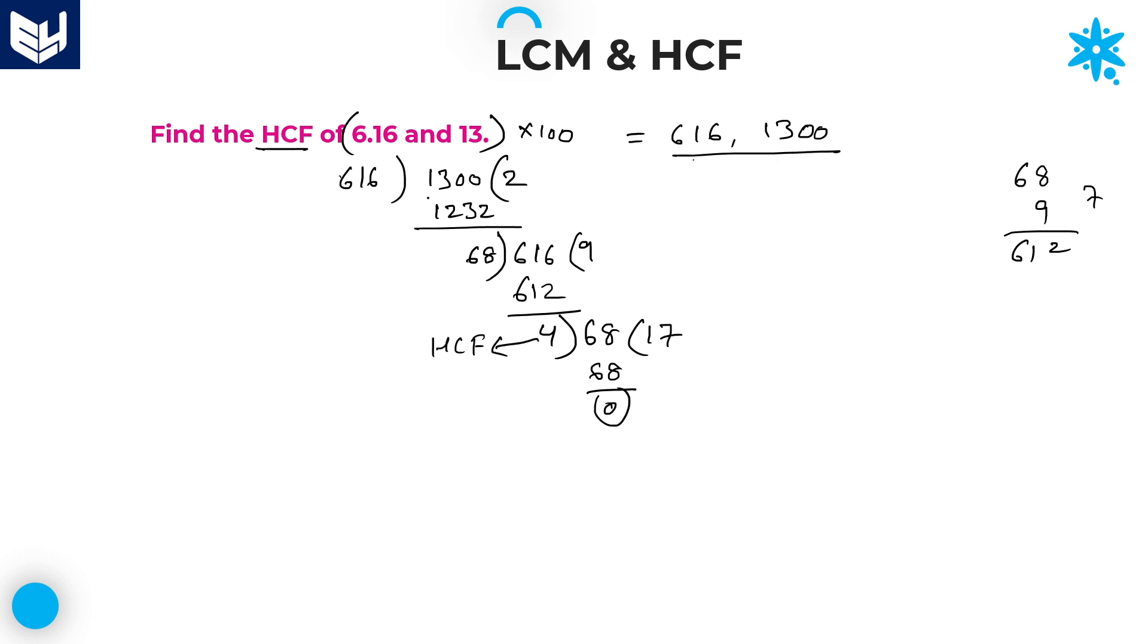But, this is not the HCF of 6.16 and 13. Initially, you multiplied with 100. After getting this value, you need to divide with 100. HCF of 6.16 and 13 which is equal to 4 divided by 100. That is 0.04. 0.04 is the HCF of these two numbers. Guys, I hope you enjoyed the session. Thank you. Thank you very much for watching.